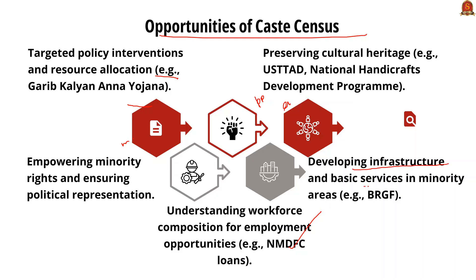It helps in developing infrastructure and basic services in minority areas — for example, the Backward Region Grant Fund, a government program designed to redress regional imbalance in development and bridge critical gaps in local infrastructure. It also helps in preservation of culture — by identifying communities experiencing cultural degradation, we can help them through caste census data.